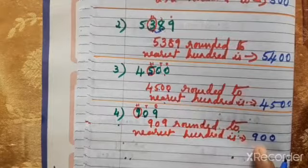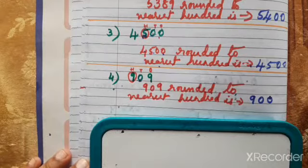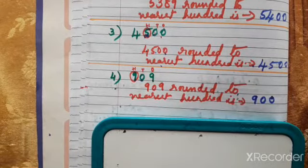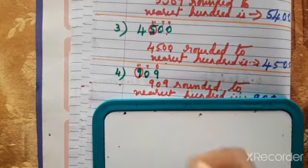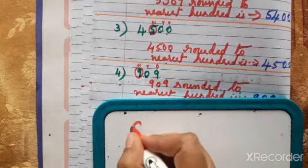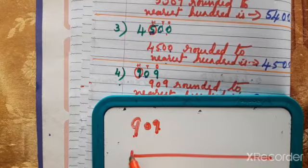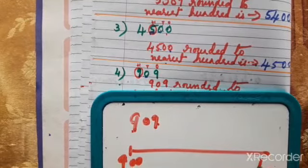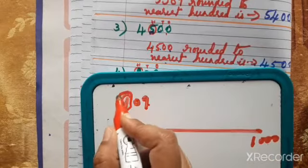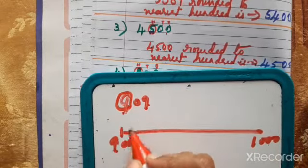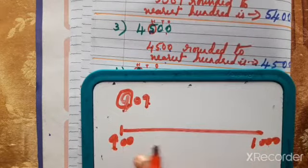So 909 rounded to the nearest hundred is 900. Now let's verify with the alternate method. We are rounding 909 to the nearest hundred. The numbers are between 900 and 1000, because the difference is 100. We are rounding the hundreds digit 9, and 900 plus 100 is 1000.